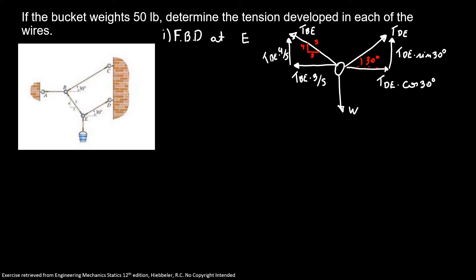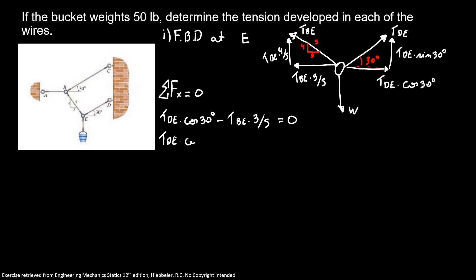Now I have all my components, I'm going to write our equilibrium equations. The sum of the forces in x equals 0. So here, tension DE times cosine of 30 minus tension BE times 3 over 5 is equal to 0, because we are at equilibrium. So, tension DE times cosine of 30 is equal to tension BE times 3 over 5.